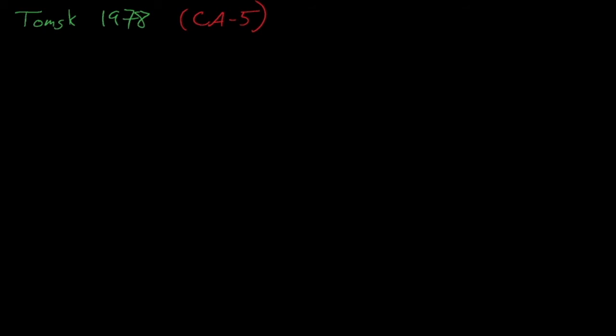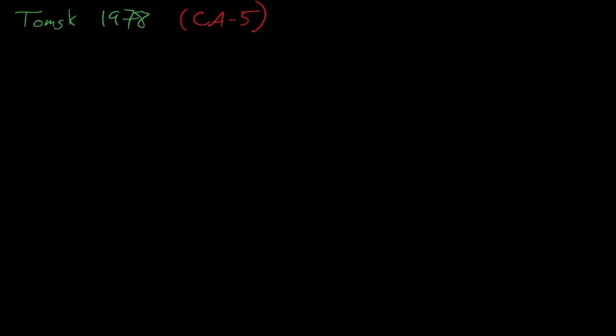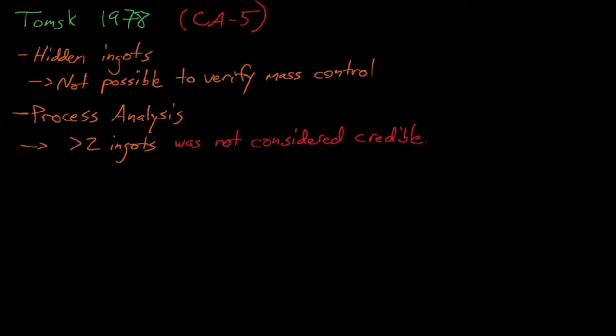So what factors contributed to this accident? One major factor was the geometrically unfavorable ingot containers, which could hold more than one ingot at a time, and were positioned such that the operators couldn't see if a container held any ingots. In fact, after this accident, the containers in this glove box were redesigned so that they could only hold one ingot at a time. Furthermore, the process analysis for this operation deemed that having more than two ingots in the same container was not a credible upset condition because of operator training, proficiency, and oversight. This process analysis was clearly flawed since four ingots ended up in the same container, and today we're going to discuss process analysis in criticality safety operations.